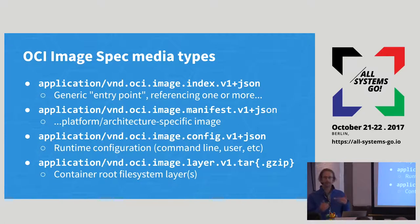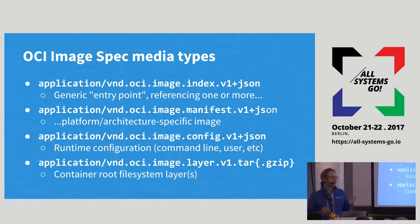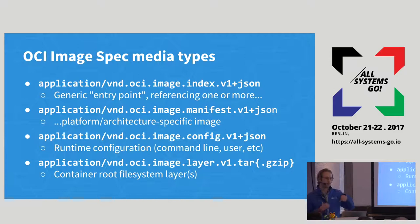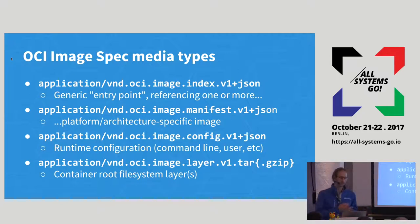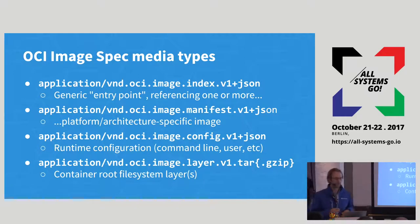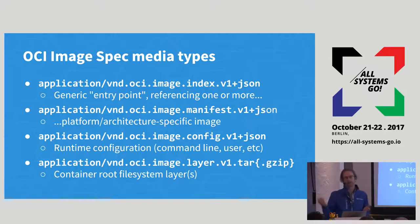What the spec actually defines is a set of media types, most of which are JSON blobs. The starting point is what we call an index, which provides the ability to have one image that can reference and run across multiple platforms — a general entry point to the image. The second thing, the image manifest, is what we think of as the image itself, and it references some configuration for how you run the image, plus all of the bits that constitute the root file system of your application.